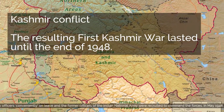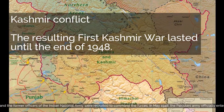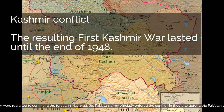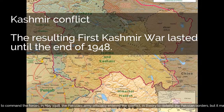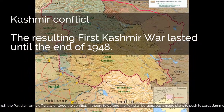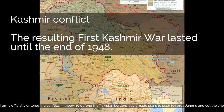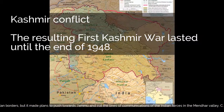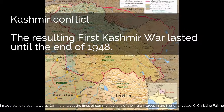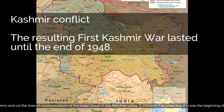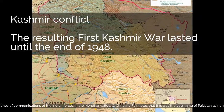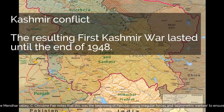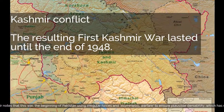In May 1948, the Pakistani Army officially entered the conflict, in theory to defend the Pakistan borders, but it made plans to push towards Jammu and cut the lines of communications of the Indian forces in the Mendhar Valley. C. Christine Fair notes that this was the beginning of Pakistan using irregular forces and asymmetric warfare to ensure plausible deniability, which has continued ever since.